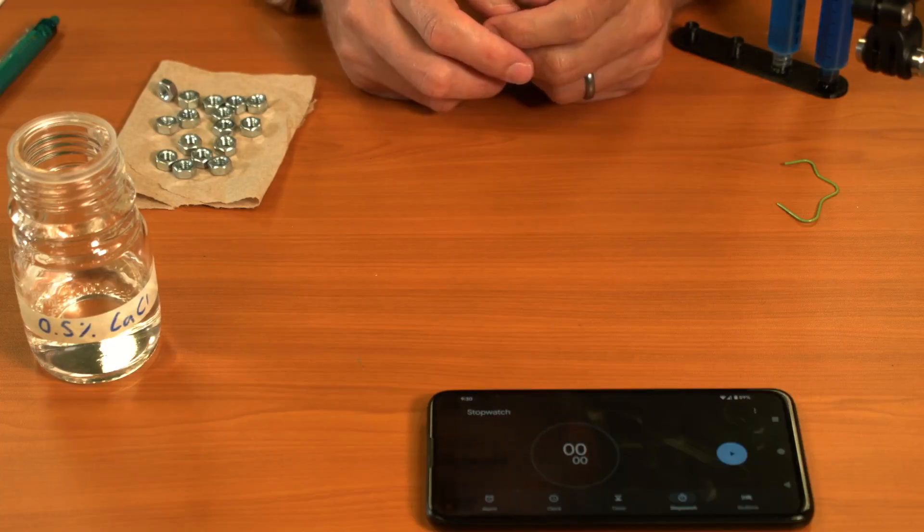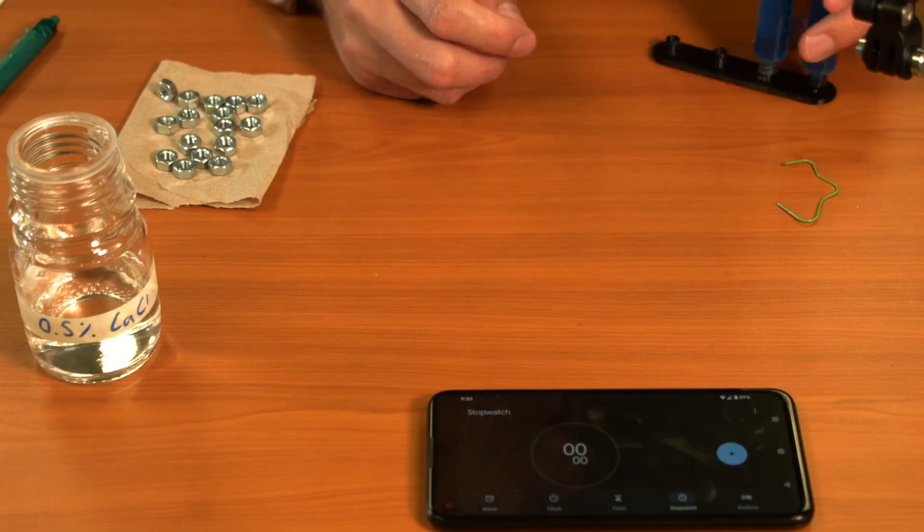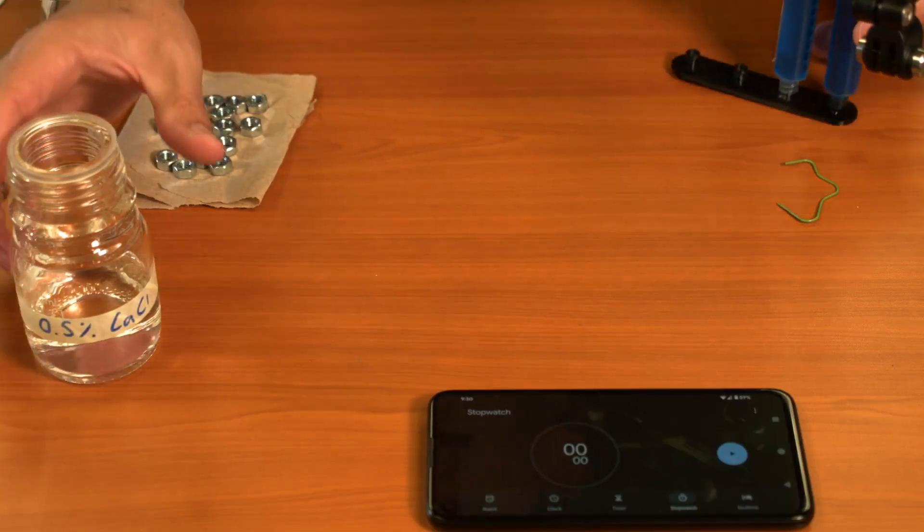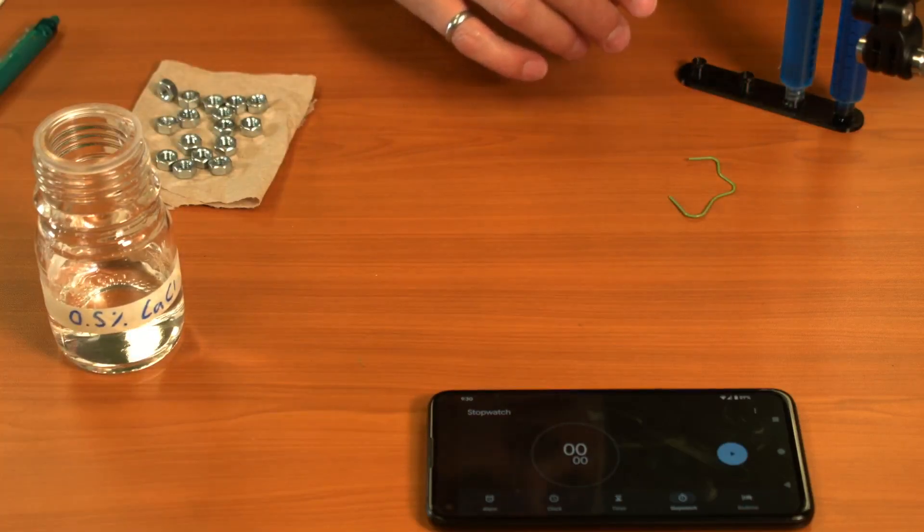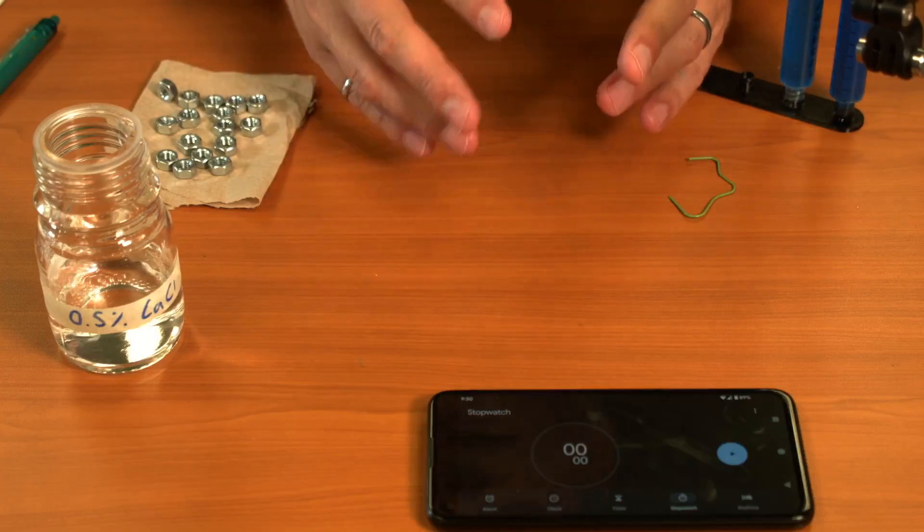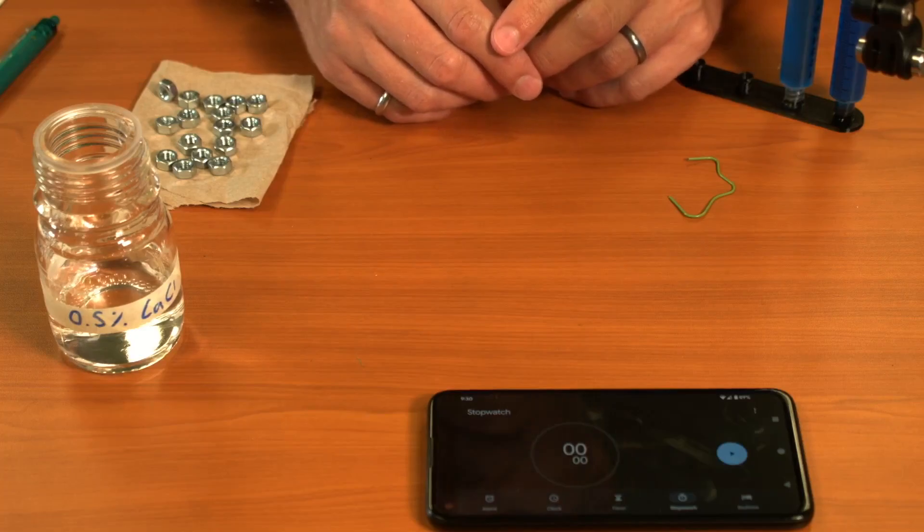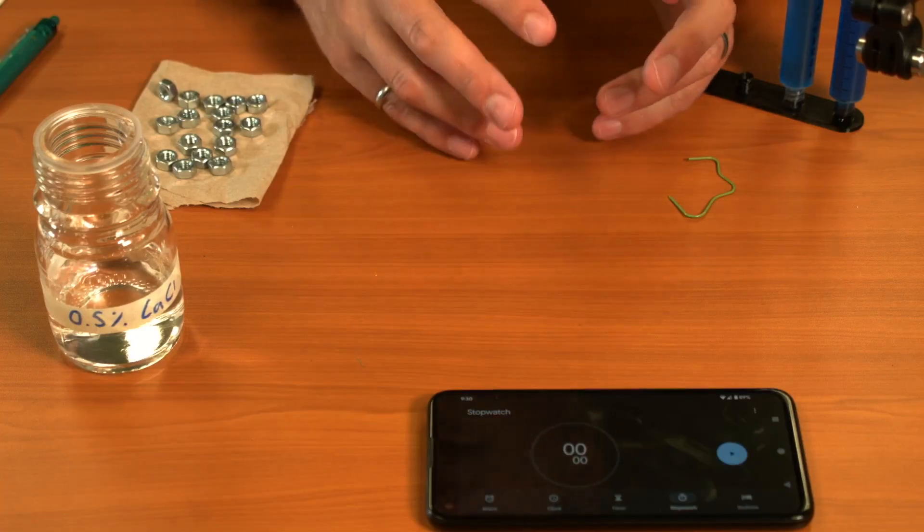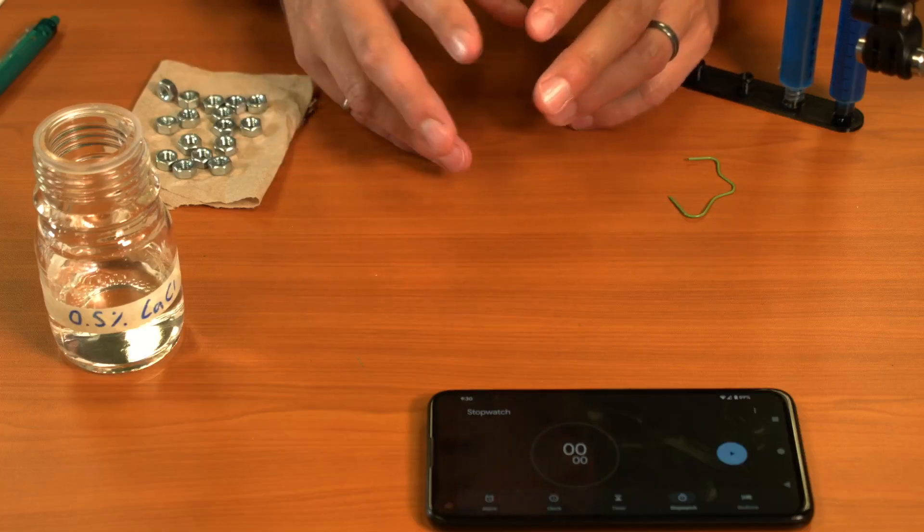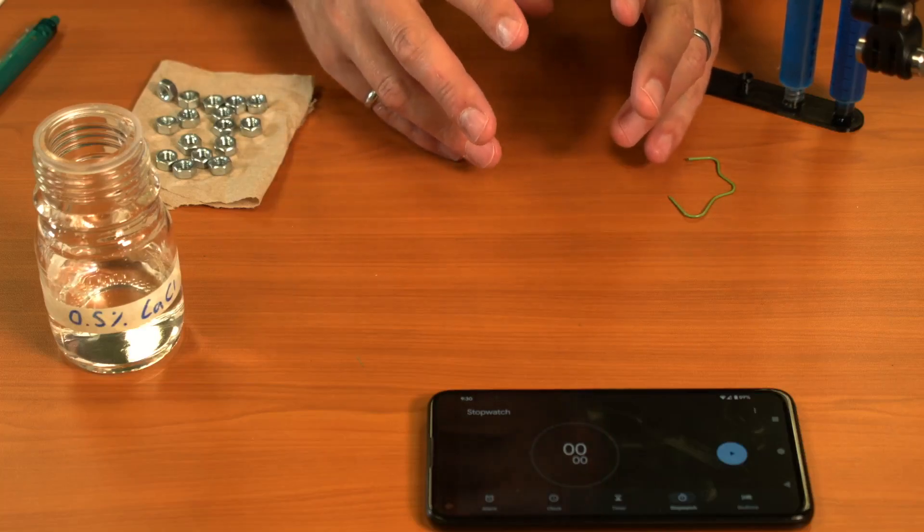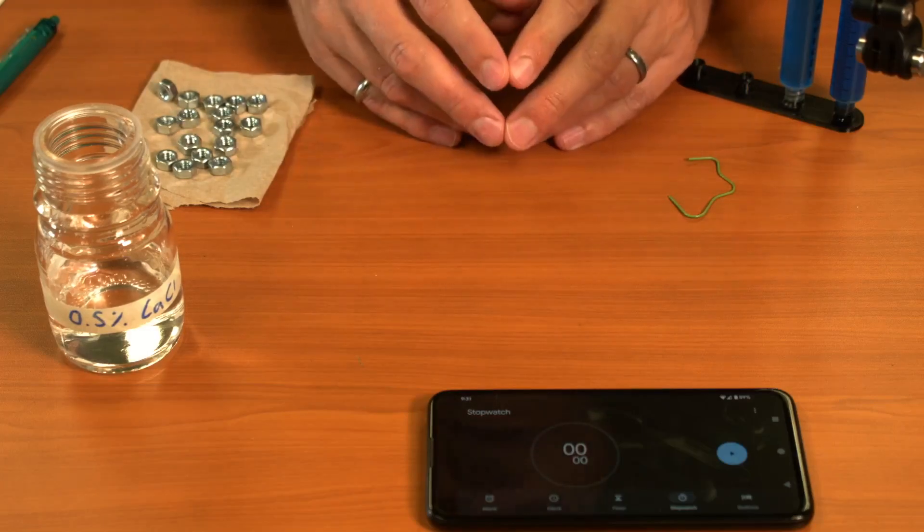Today we're going to be making some sodium alginate rings by cross-linking our gel with calcium chloride. To do this, we need to develop our geometry, in this case manually, and then expose the sodium alginate to the calcium chloride. The calcium chloride will stiffen and transition that gel into a solid, not a very strong solid, but a solid.